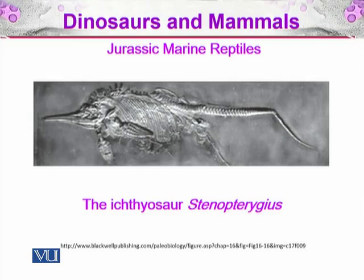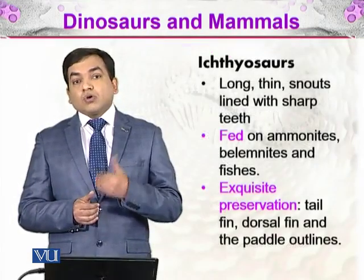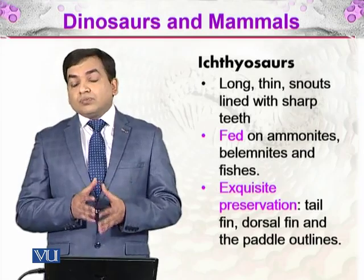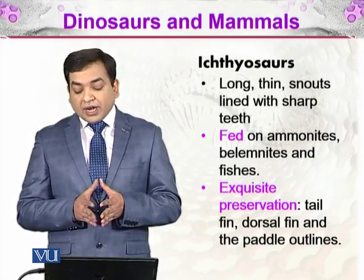You can see it has a pretty much streamlined body, much like a fish, but it is not a fish because it is a reptile. Here you can see only its structure as a fossil — you can see the paddles on the front side and its tail or the rear limbs as well. Ichthyosaurs were long and thin, their snout lined with sharp teeth, and they fed on ammonites, belemnites, and fishes.